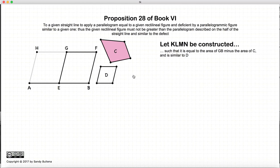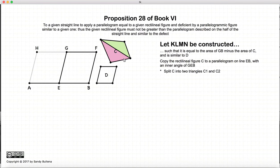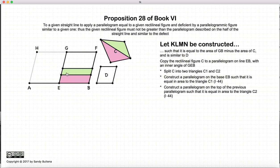So the next bit is going to be how we're constructing KLMN. Again, we want to construct KLMN so that it is equal in area to GB minus C and similar to D. So let's first copy the rectilineal figure C to the parallelogram at EB with the angle GEB. So we split our rectilineal figure into triangles, and we copy this first triangle onto EB, and then we copy the second triangle onto this line here again with the angle GEB.